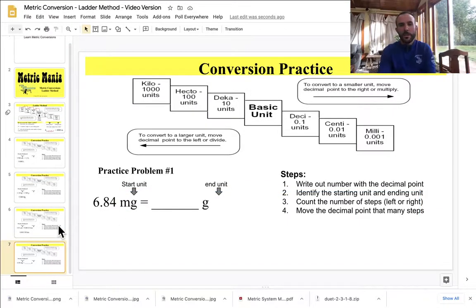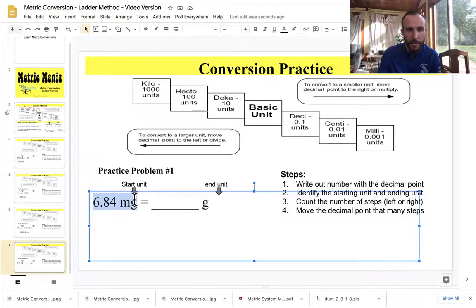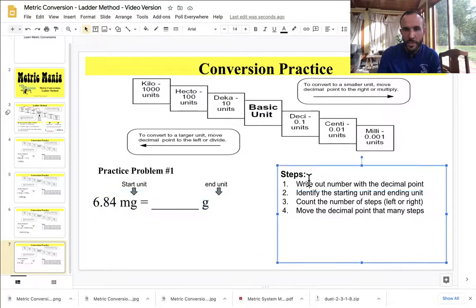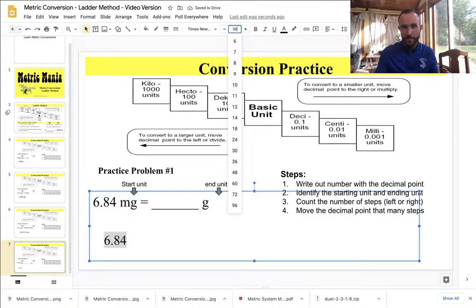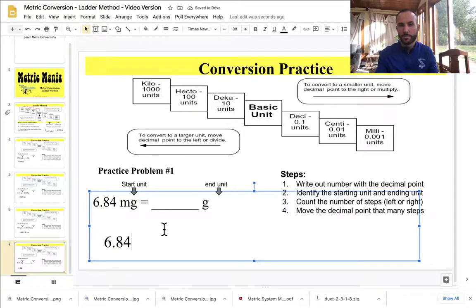Let's try another one. Getting the hang of this. This will be our last one. Okay. So we are going to go from 6.84 milligrams. And we're going to convert that into grams. So first thing, write out the number with the decimal point. So I'm going to write 6.84. Let's make that nice and big so that you can see. Yeah, I'm going to go even bigger than that. 6.84. And now I'm going to identify the starting unit, milligrams, and the ending unit, grams. So I'm going from milli to the base.